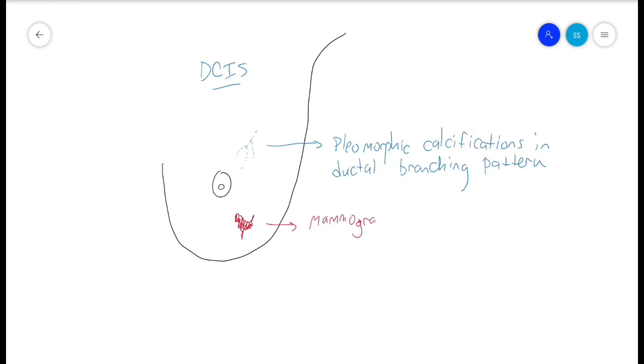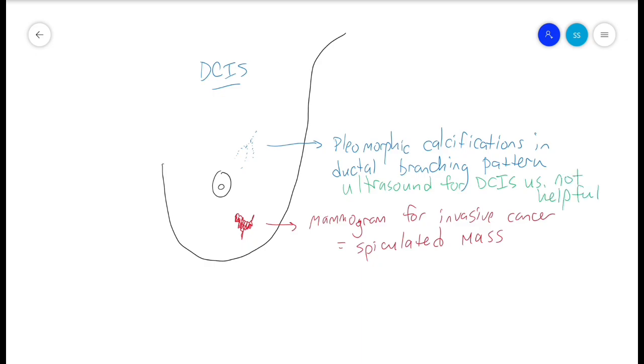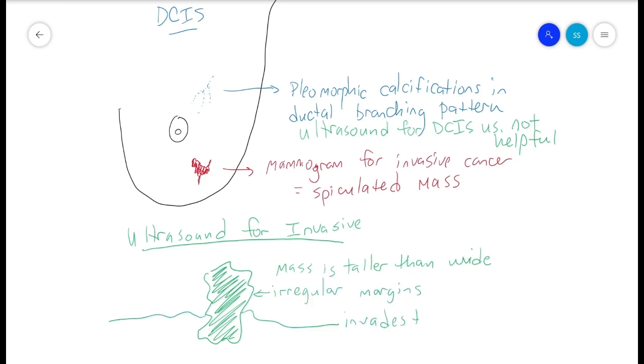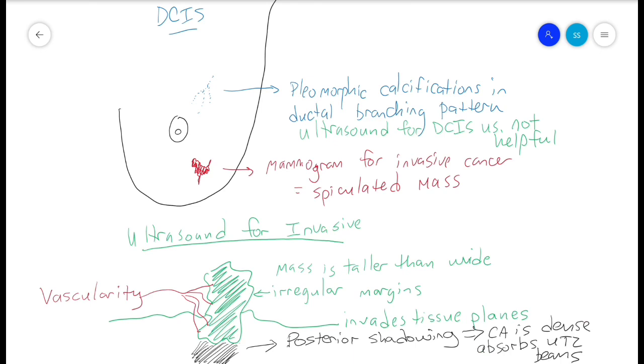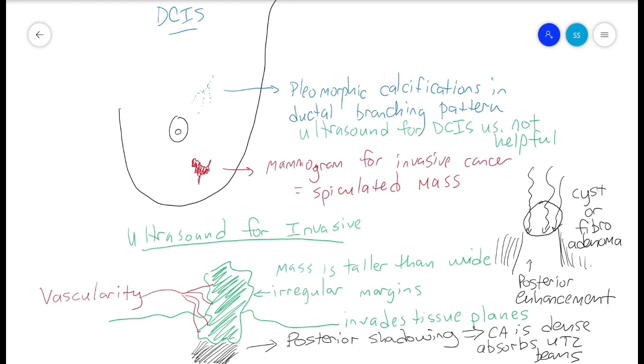Mammogram findings for DCIS is usually pleomorphic calcifications in a ductal branching pattern. Mammogram findings for invasive breast cancer is usually a speculated mass. Ultrasound findings for DCIS are pretty minimal. Ultrasound findings for invasive cancer are a mass that is taller than wide, has irregular margins, invades tissue planes, has posterior shadowing, and high vascularity. The posterior shadowing with ultrasound is because breast cancer is super dense and absorbs the ultrasound beams, whereas cysts and fibroadenomas have posterior enhancement because the ultrasound beams travel easily through them. MRI is good at finding both invasive and in situ cancers. You will find a very wide variety of use of MRI among breast surgeons, but some basic rules are that MRI is good for high-risk screening and good to evaluate cancers in very dense breasts, possibly multifocal disease, and in lobular cancers that are known to have a high risk of bilateral multifocal disease.